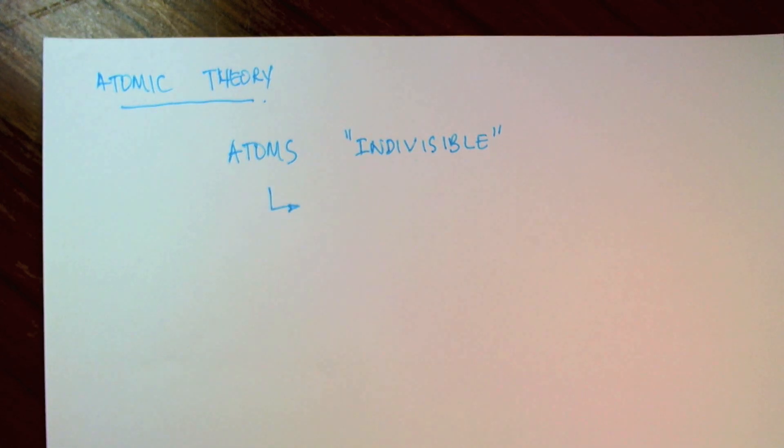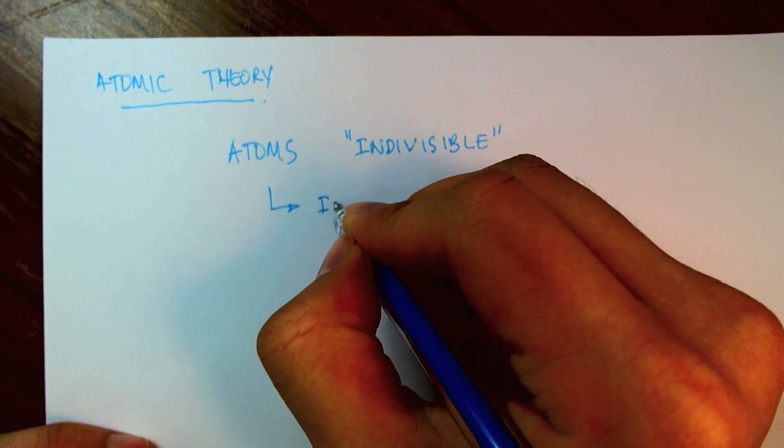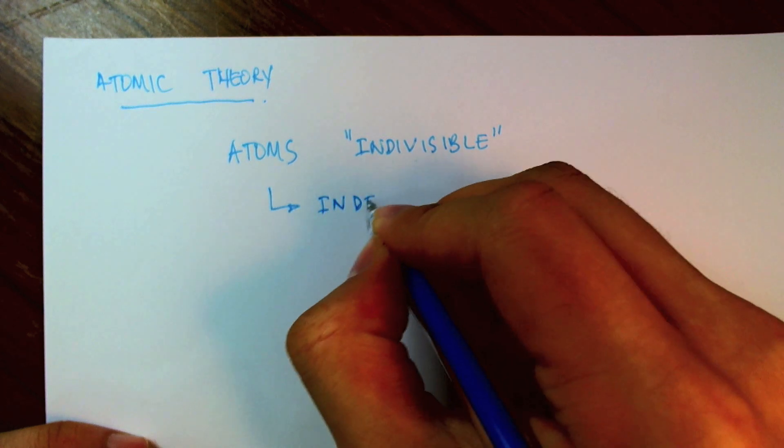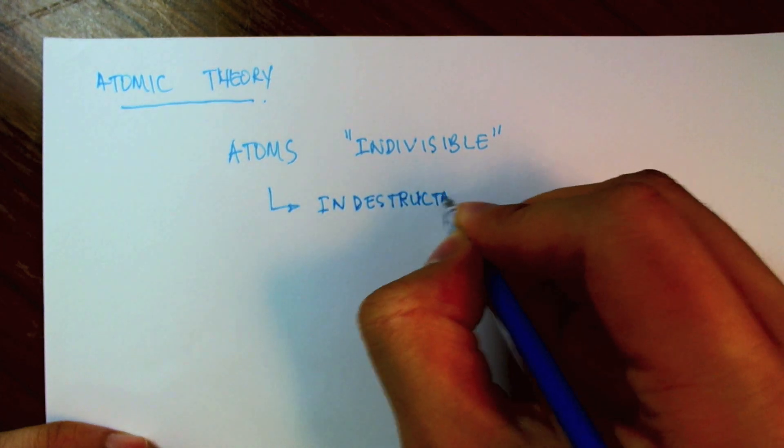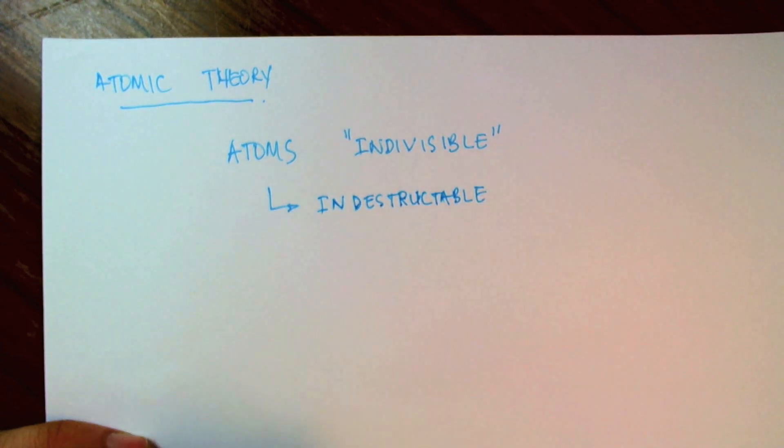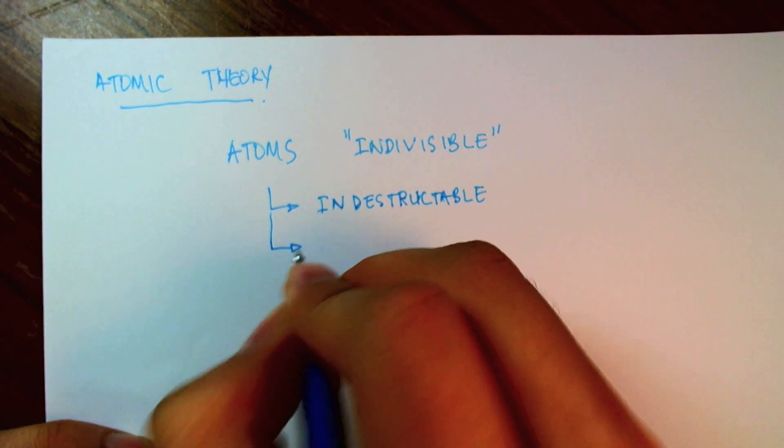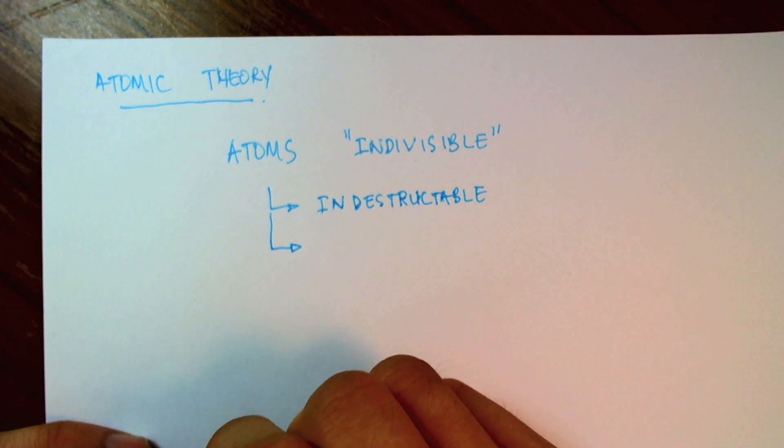In addition to being indivisible, Democritus philosophized that particles, these atoms, as he called them, were indestructible. They have always been here, always will be, and cannot be destroyed.